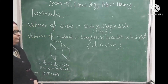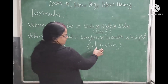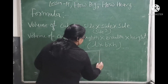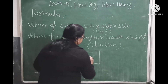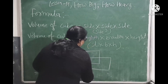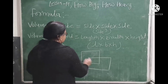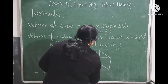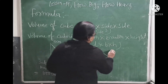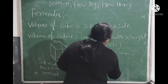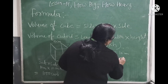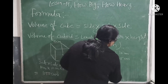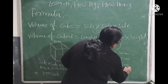Volume of a cuboid — this formula is length into breadth into height. For this cuboid, length, height, and breadth are all different. So, the length is 10 cm, breadth is 5 cm, and height is 3 cm.